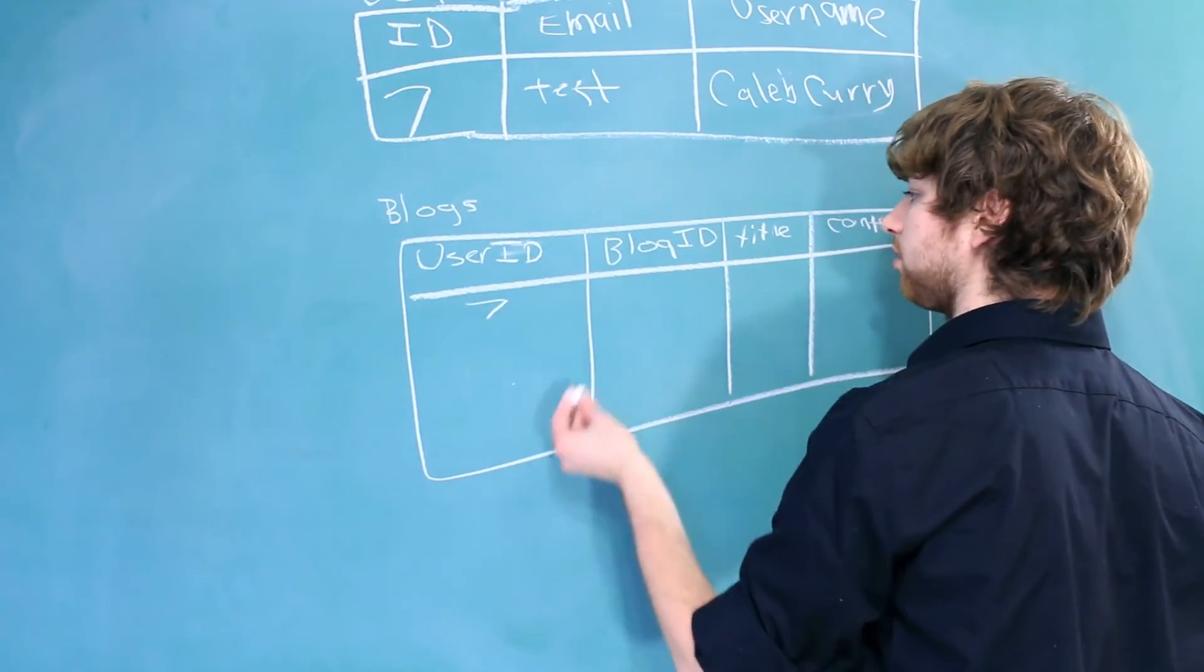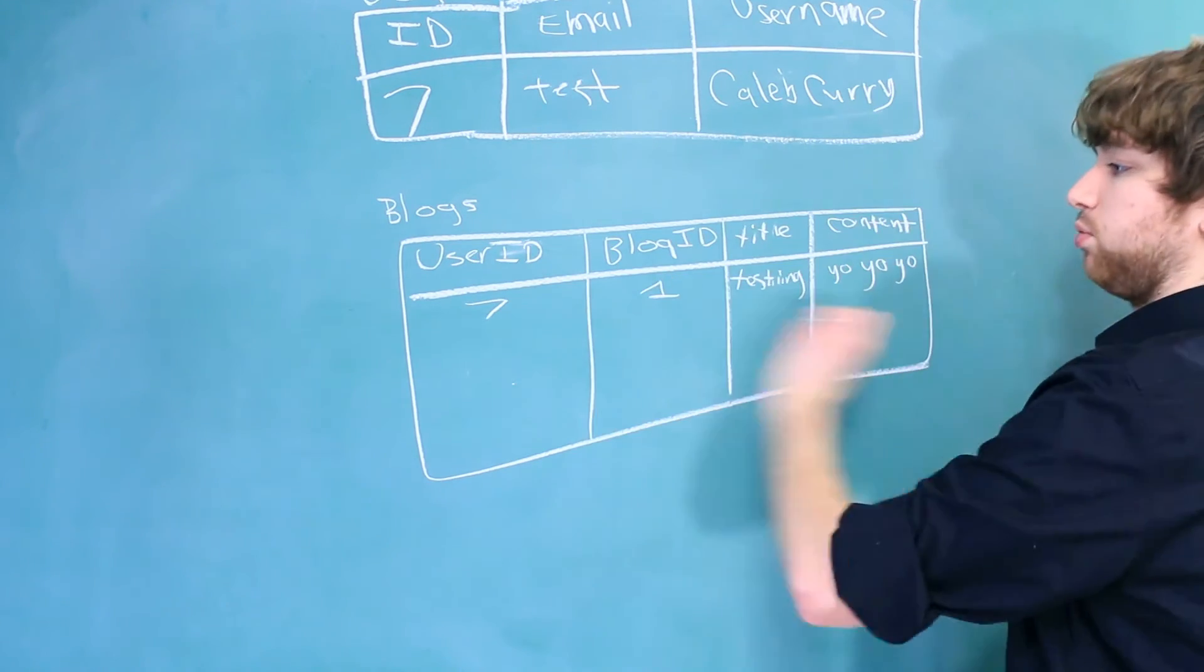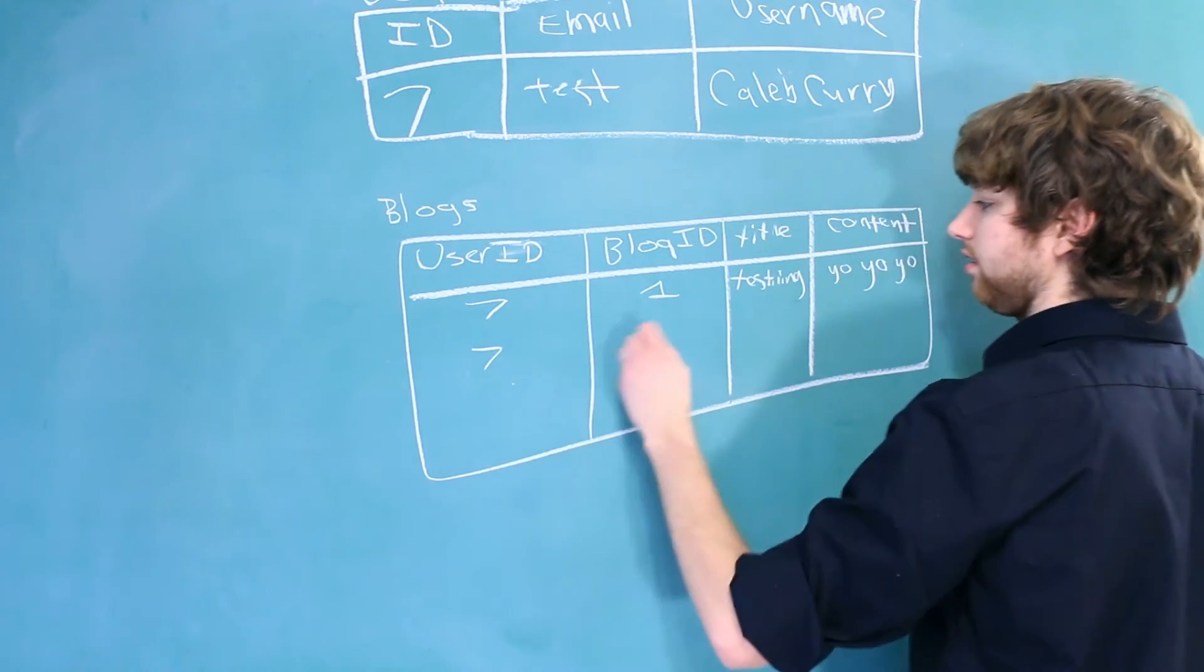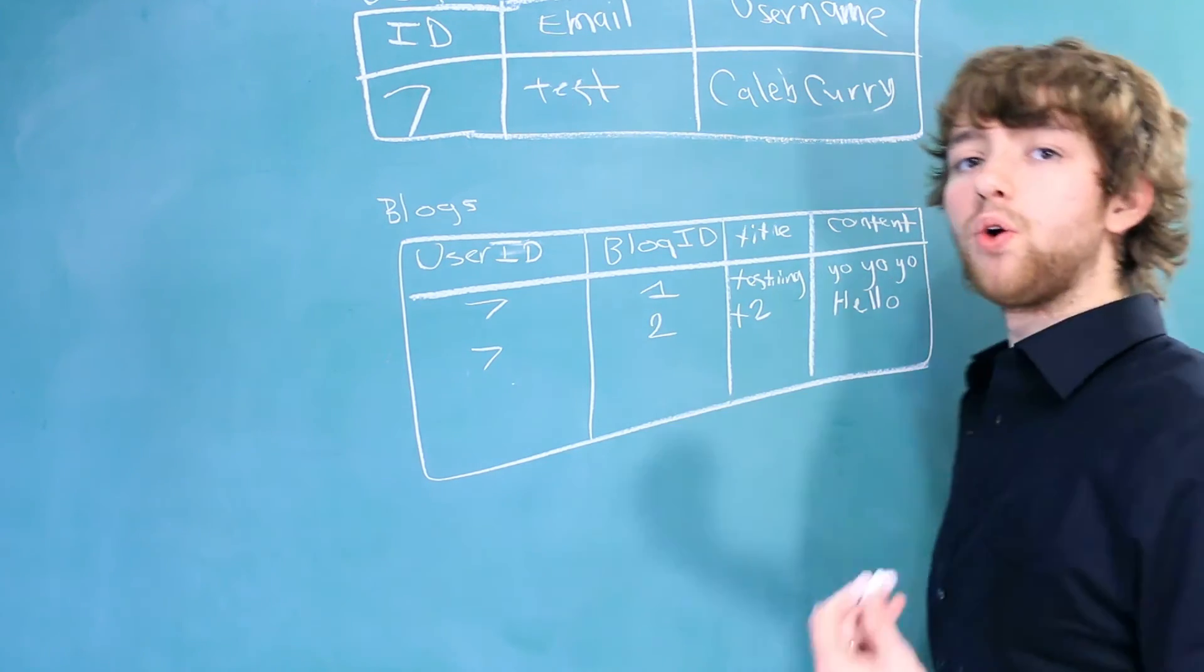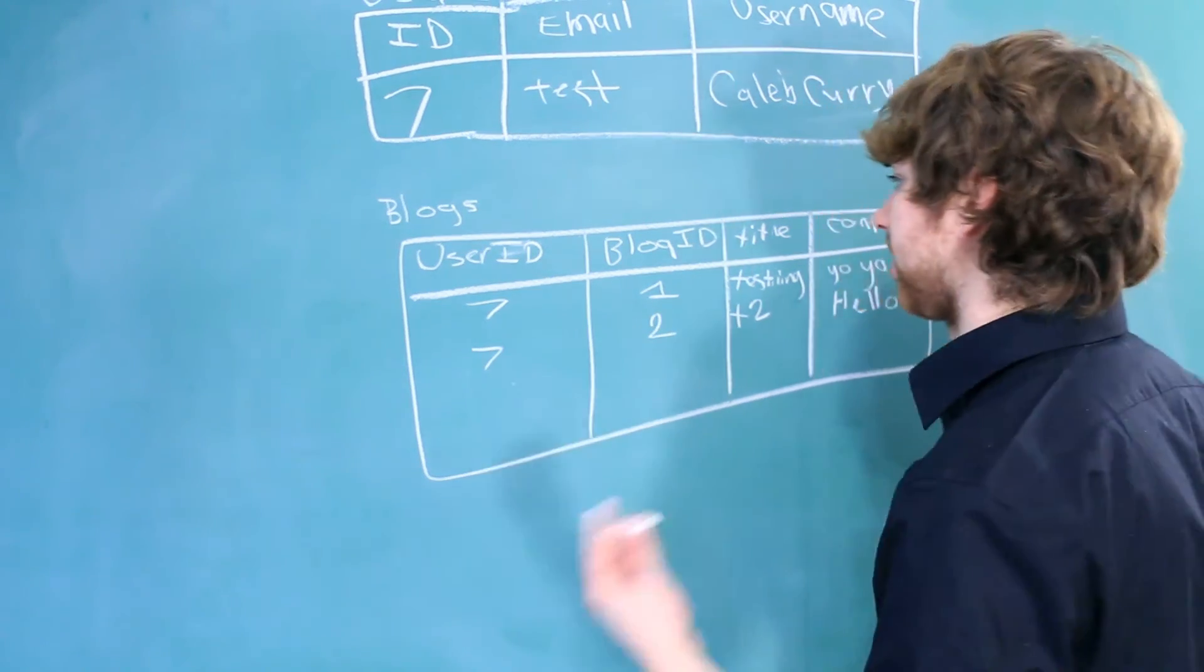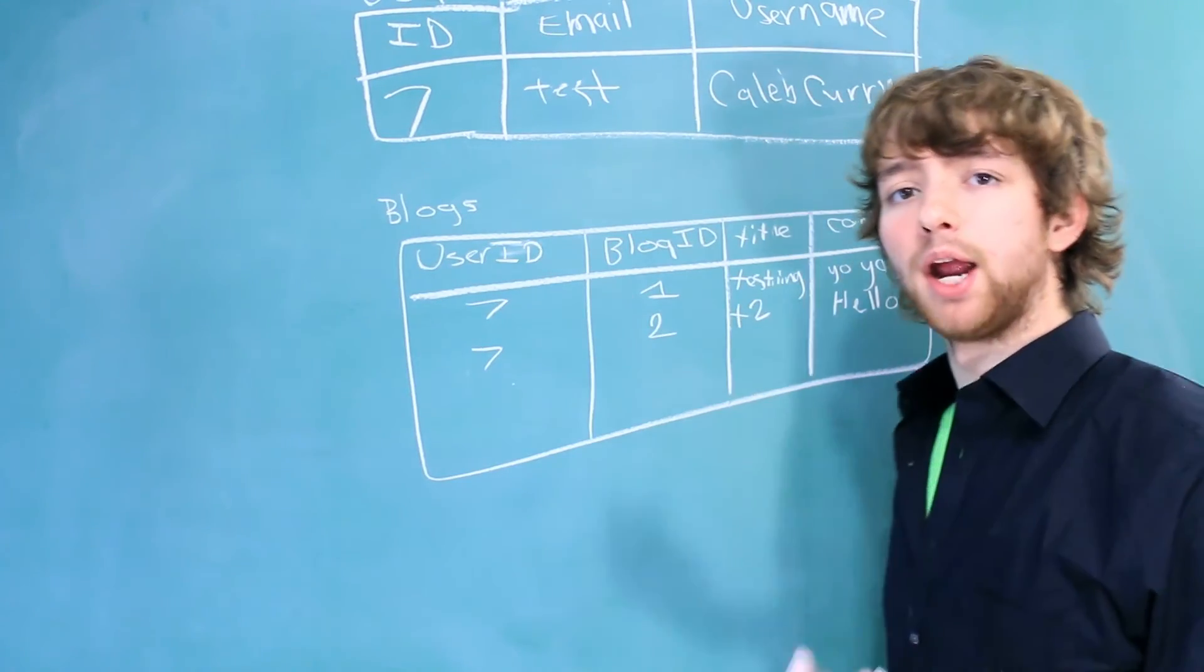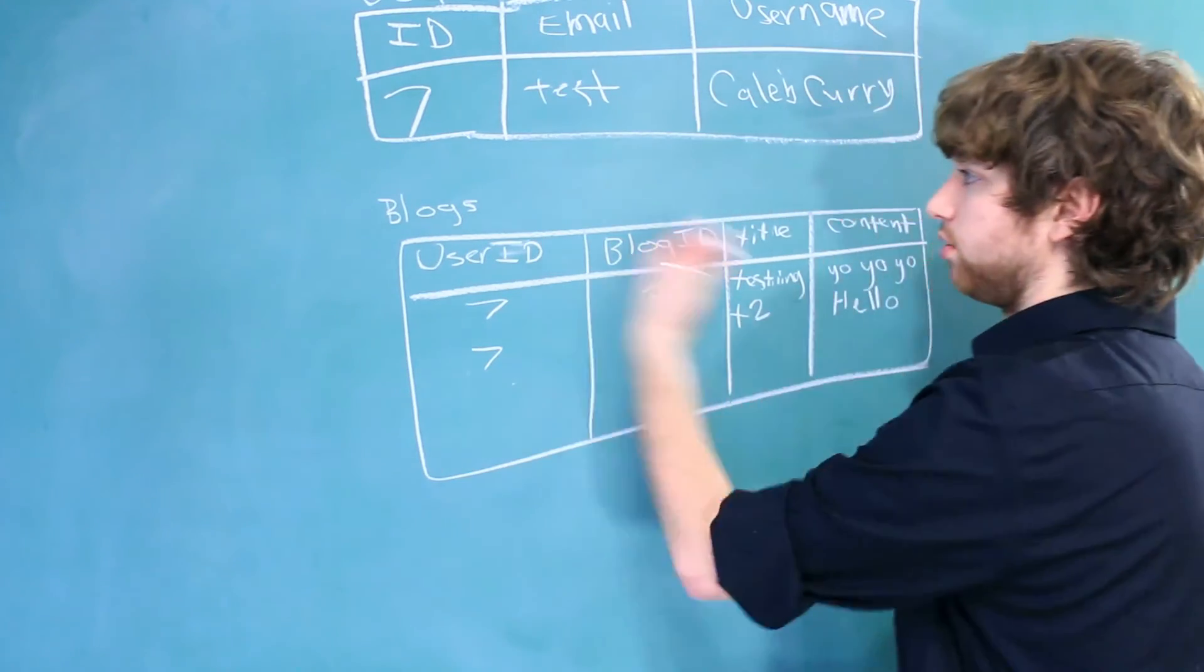So we could have user ID of seven, blog ID of one, that would be one blog. Then if we had another one, it would be seven, two, that would be another blog. And you can see we don't have any redundant data. That's because the blogs table has the bare minimum required to describe a blog.